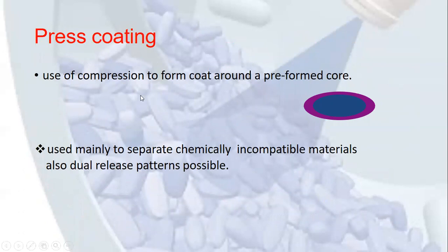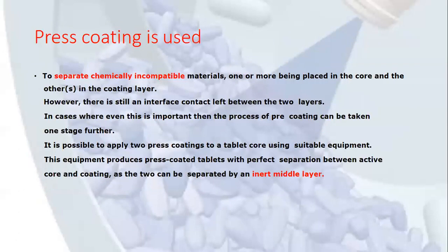Press coating is a modern coating method that uses compression to form a coat around a pre-formed core. It is used mainly to separate chemically incompatible materials and allows for dual release patterns — immediate release material in the core and sustained release material in the coating layer. It is possible to apply two press coatings on a tablet core using suitable equipment, producing press-coated tablets with perfect separation between active core and coating by means of an inert middle layer.